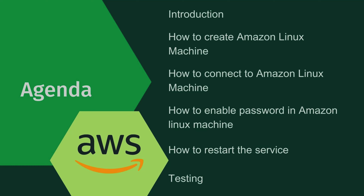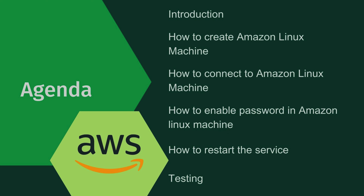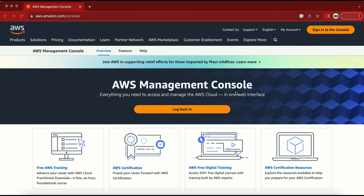Hi YouTube family, my name is Vicky and in today's video we are going to learn how to enable Amazon EC2 Linux machine password login. If you are already familiar with how to create an EC2 machine, you know whenever you create one you have to login with a key pair — there is no password to login to the machine. So we need to do something in order to login with a password.